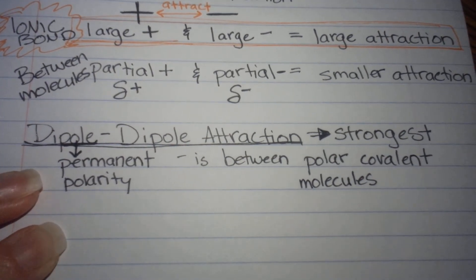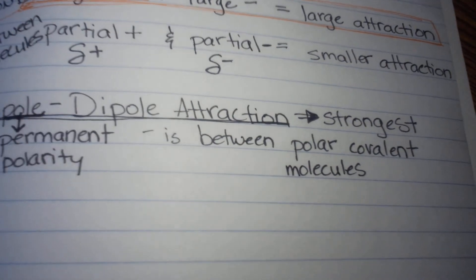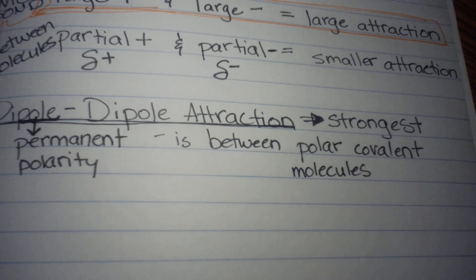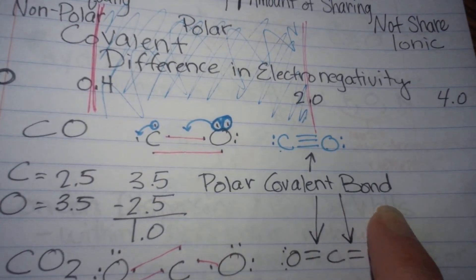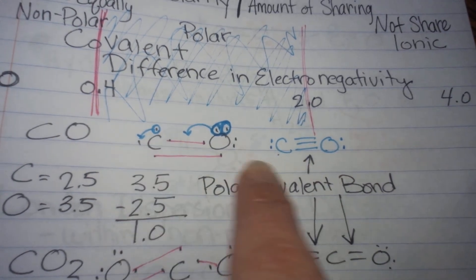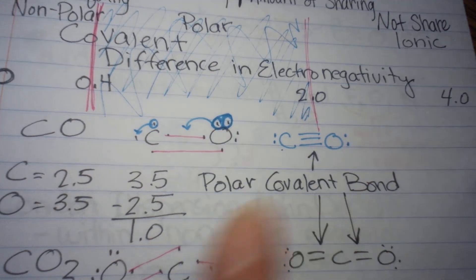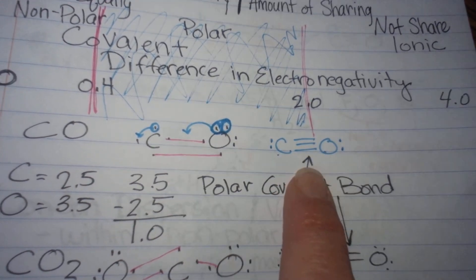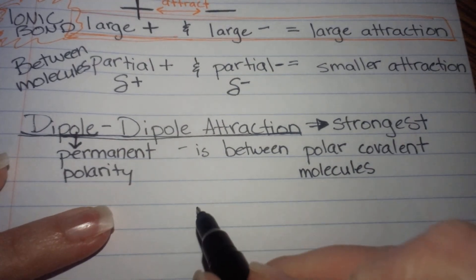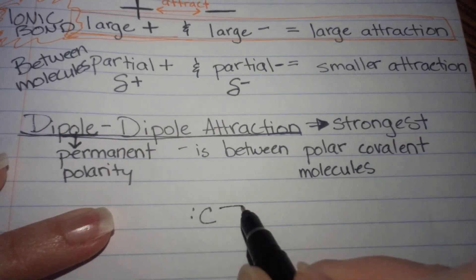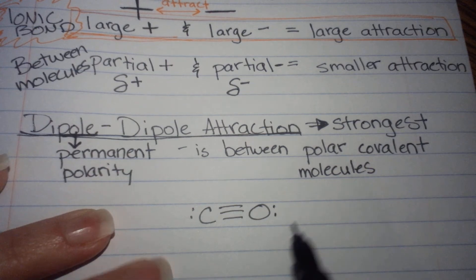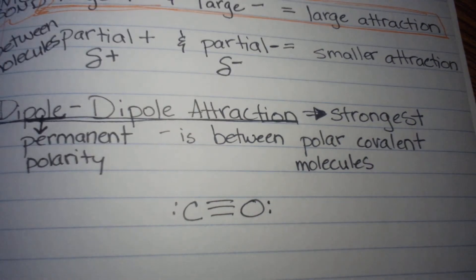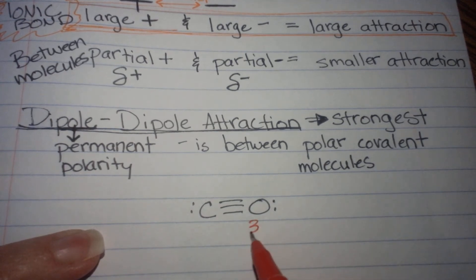Let's go back to our notes from yesterday. We talked about polar covalent bonds and had carbon monoxide as an example. Oxygen was 3.5 and carbon was 2.5 in electronegativity. Might not be the best example in the world, but it'll work. Maybe we didn't make the full connection on what those numbers really meant, but we're going to try to make that connection today.